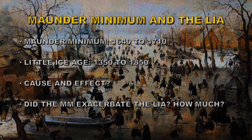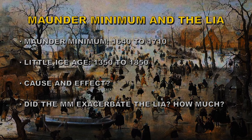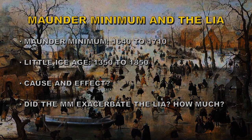Often when talking about the Maunder Minimum, people link it to the Little Ice Age. That's not very good science, because the Maunder Minimum ran from 1640 to 1710, whereas the Little Ice Age started in 1350 and went to 1850. It started 300 years before the Maunder Minimum and carried on at least 150 years after it. If it's cause and effect, you could only argue that the Little Ice Age caused the Maunder Minimum, which is of course very silly.